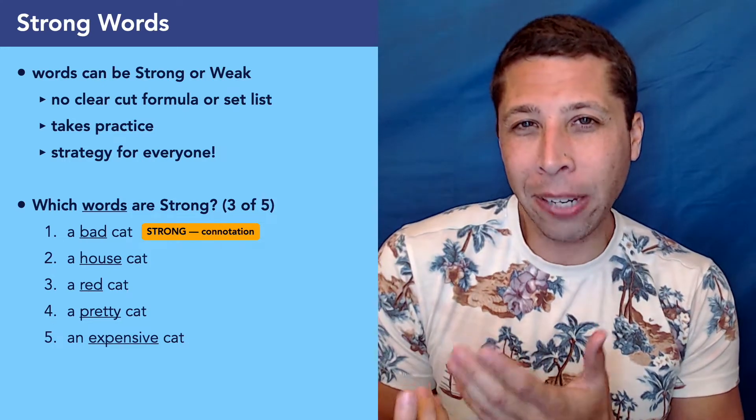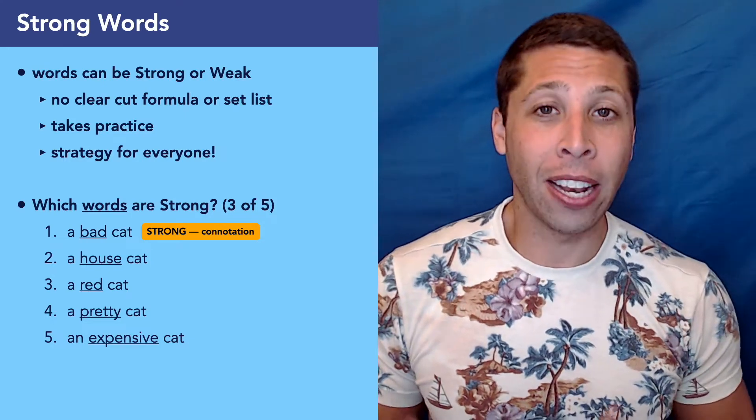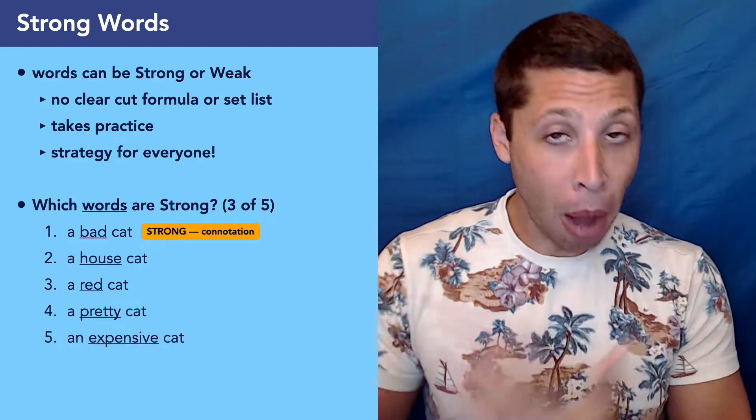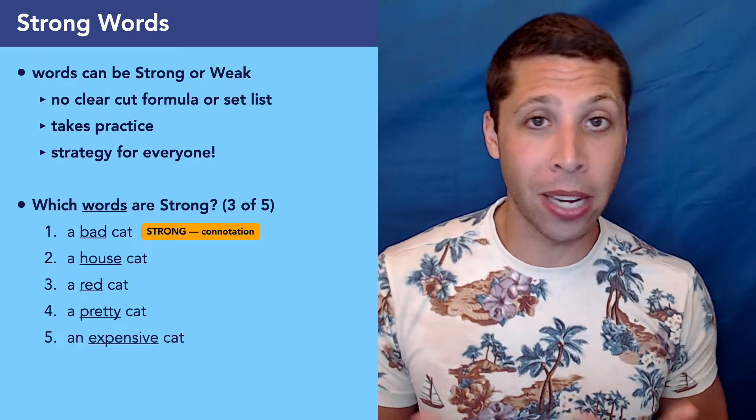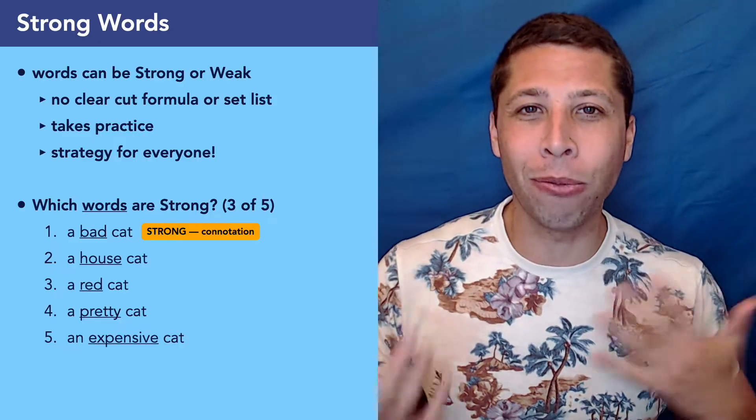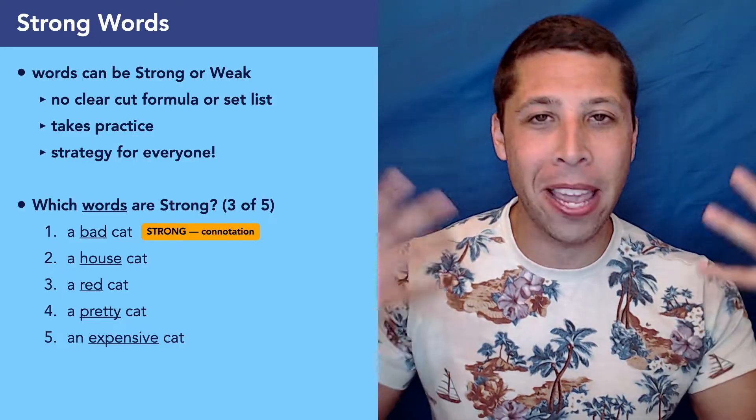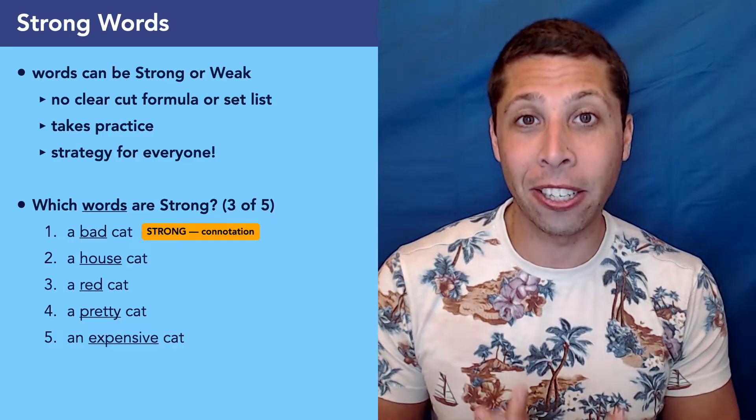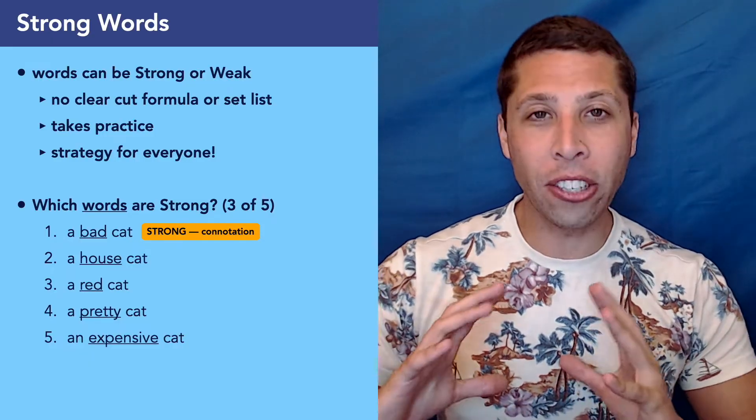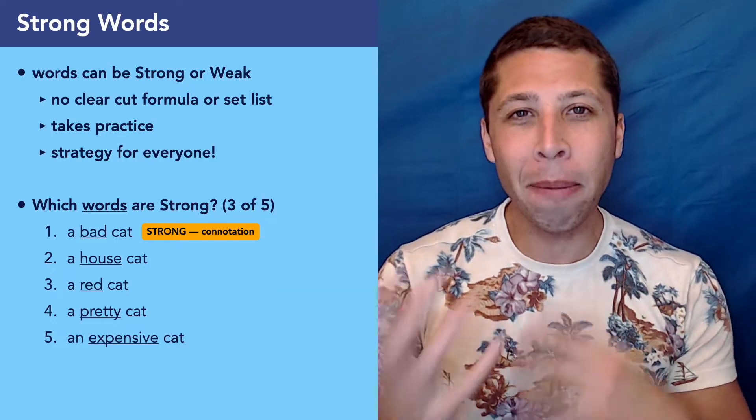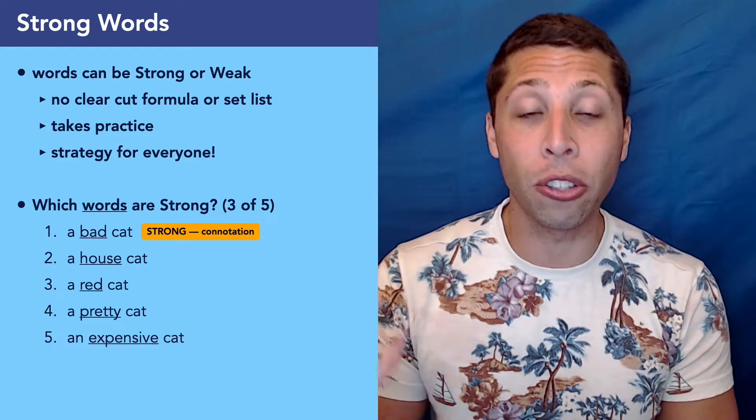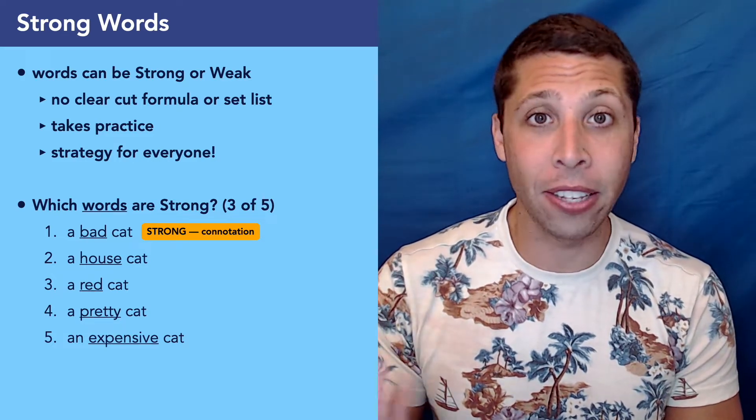If we had just a picture of a cat and then we were told it was bad, now we have this negative image of the cat. So that's definitely changing my opinion about the cat in a meaningful way. So connotation definitely is going to continue to be an important part of the strong words strategy, but if you told me that it was a house cat, that really doesn't have a connotation and it doesn't really change my opinion in any way.